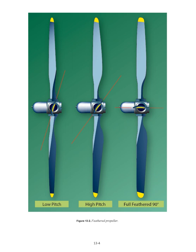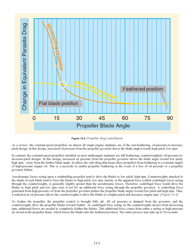Feathering is important because of the change in parasite drag with propeller blade angle. When the propeller blade is in the feathered position, parasite drag is at a minimum. A propeller windmilling at high RPM in the low range of blade angles can produce parasite drag as great as the parasite drag of the entire airframe. The constant speed propellers on almost all single-engine airplanes are non-feathering, oil-pressure-to-increase-pitch designs, where increased oil pressure drives the blade angle toward high pitch/low RPM. In contrast, most multi-engine airplanes use full feathering, counterweighted, oil-pressure-to-decrease-pitch designs, where increased oil pressure drives the blade angle toward low pitch/high RPM. The only thing that keeps these propellers from feathering is a constant supply of high-pressure engine oil.